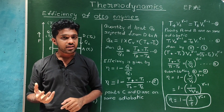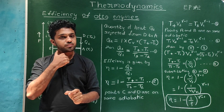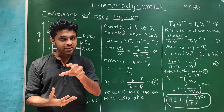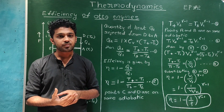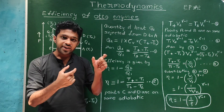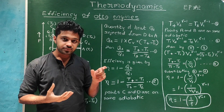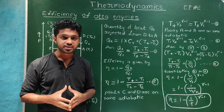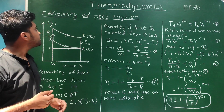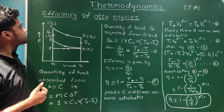Efficiency is the ratio of work done divided by energy consumed. Now we are going to derive the equation for efficiency of the Otto engine.